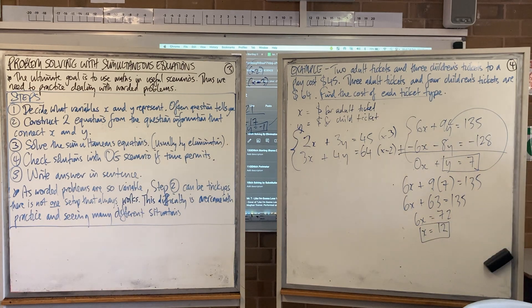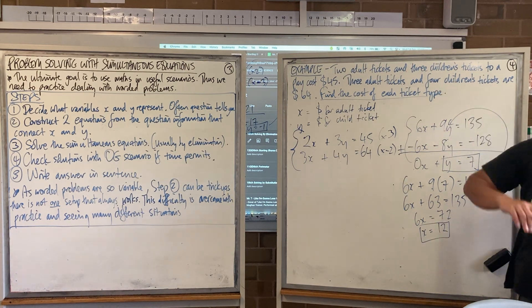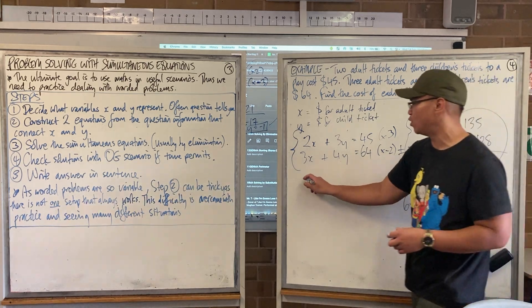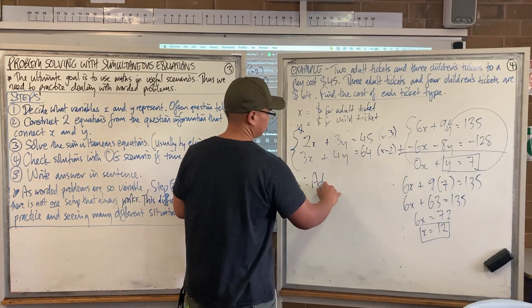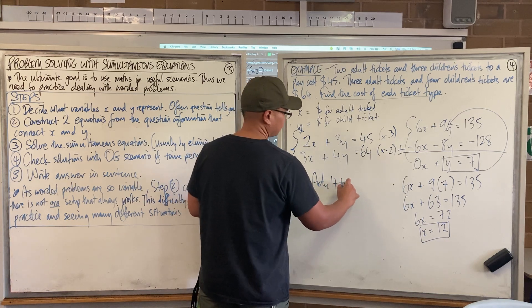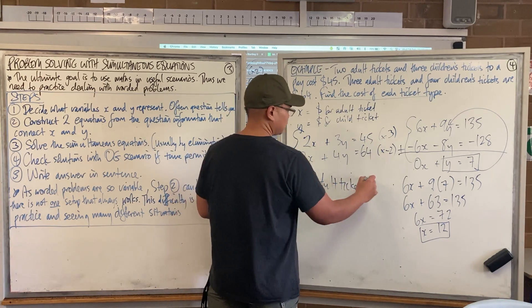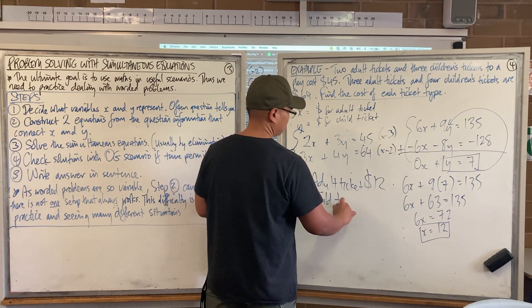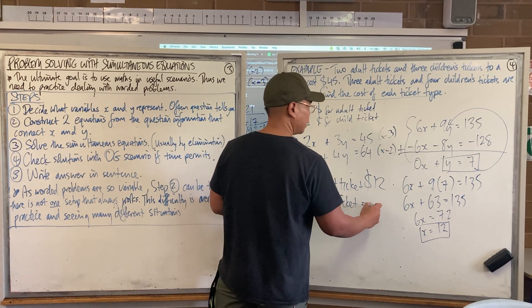I'm not finished yet, because you were given the question in sentences, so you need to write the answer in sentences. Therefore, adult ticket was x is 12 bucks. Child ticket was 7 bucks.